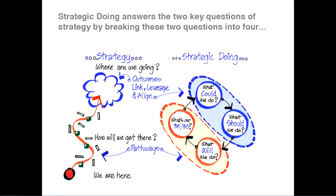So in order to answer these two questions, strategic doing actually divides them into four. The first two questions are, what could we do and what should we do? What could we do invites us to look at our assets and figure out how we can link and leverage these assets towards shared outcomes, explore different opportunities that we might have by adding new assets to our network and to see what we could do together to advance our own individual agendas.